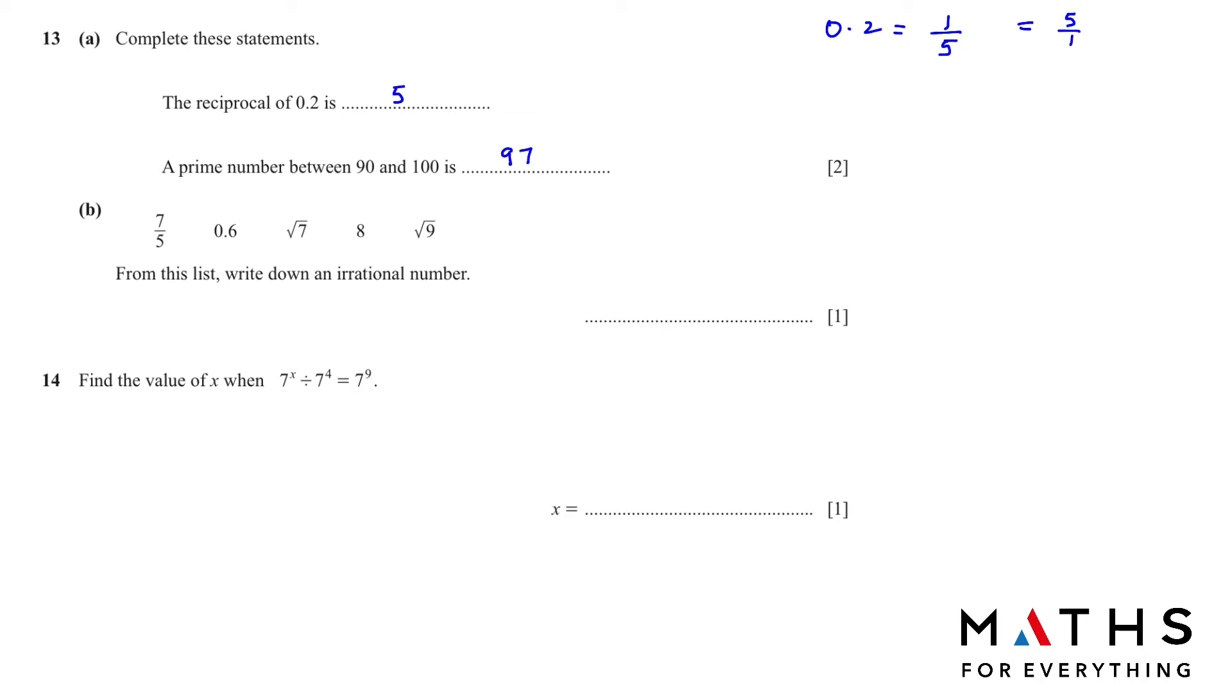Part b: From this list, write down an irrational number. An irrational number is a number that cannot be written as a fraction or a decimal. So this is a fraction, this is a decimal, this is a whole number. Square root 9, when you put in the calculator, you are going to get 3, which is a whole number. So the irrational number is square root 7.